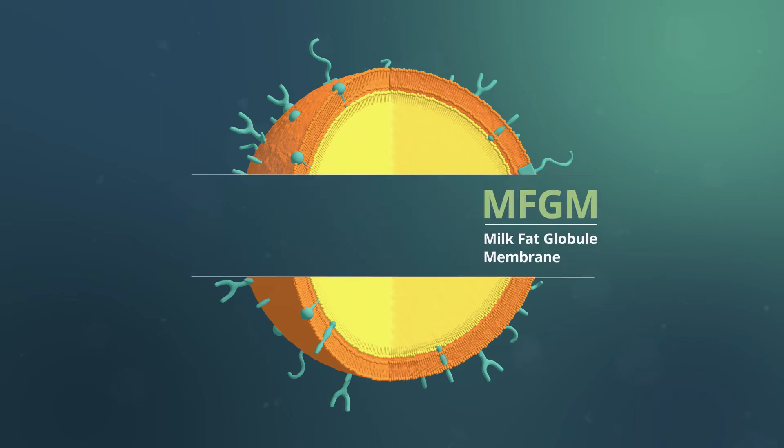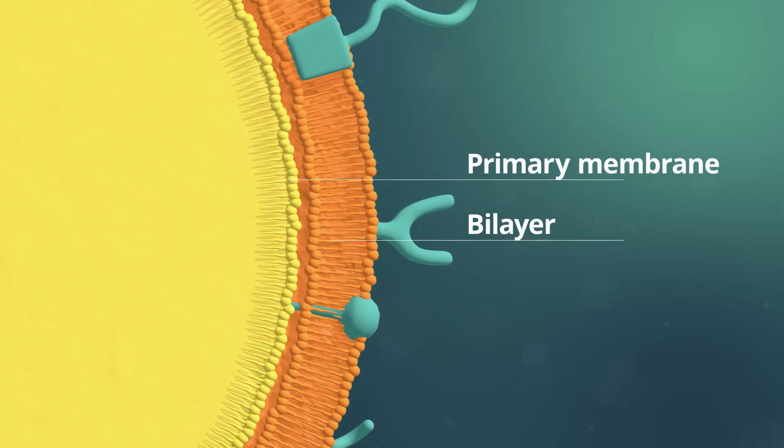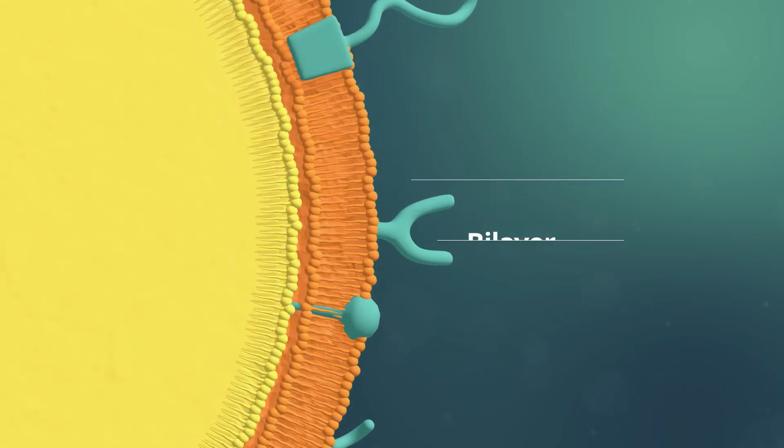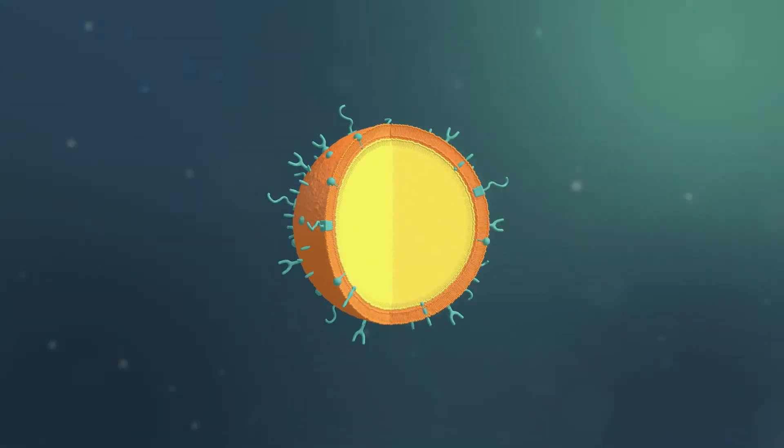The milk fat globule membrane, or MFGM, is a naturally occurring tri-layer membrane that surrounds and stabilizes milk fat droplets secreted into human milk.